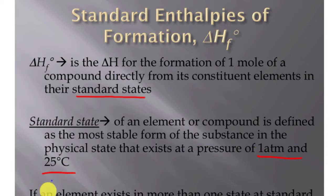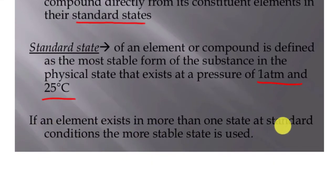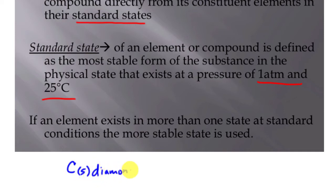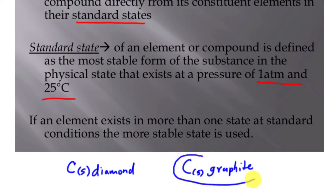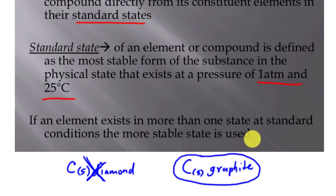If elements exist in more than one form at standard conditions, we use the more stable state. For example, carbon has two different solid forms: diamond and graphite. The more stable version is actually graphite — we'll talk more about why in thermodynamics. This isn't too important right now; you'll have a table that helps you figure out which form is more stable, based on what we'll look at in the next slide.